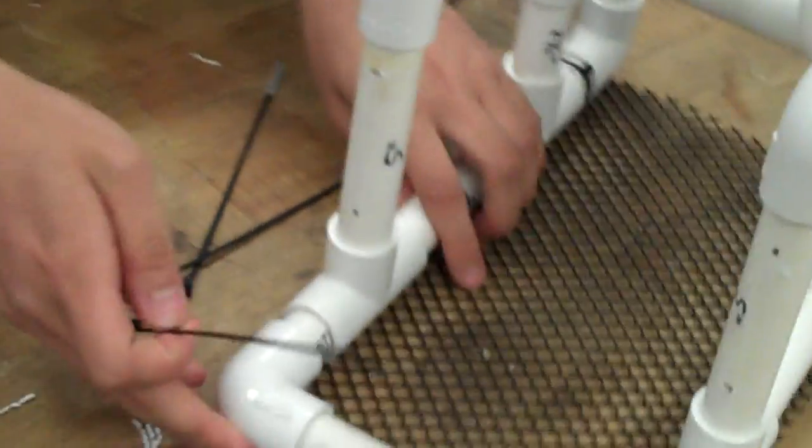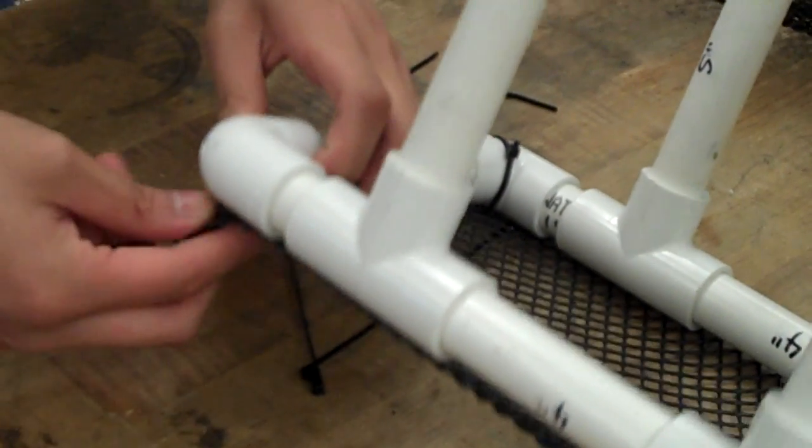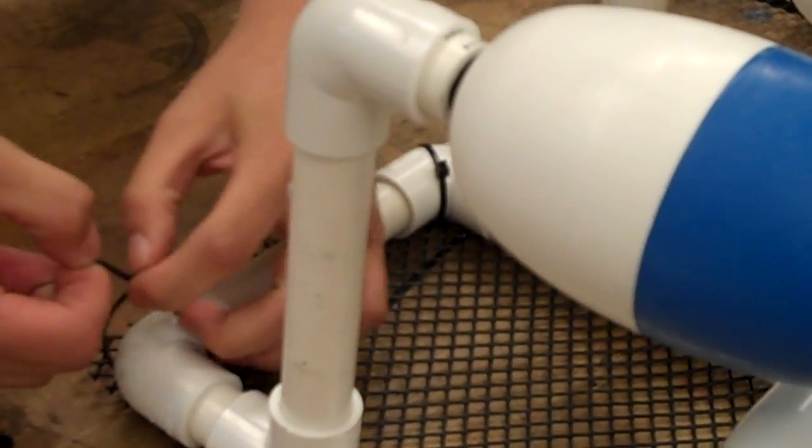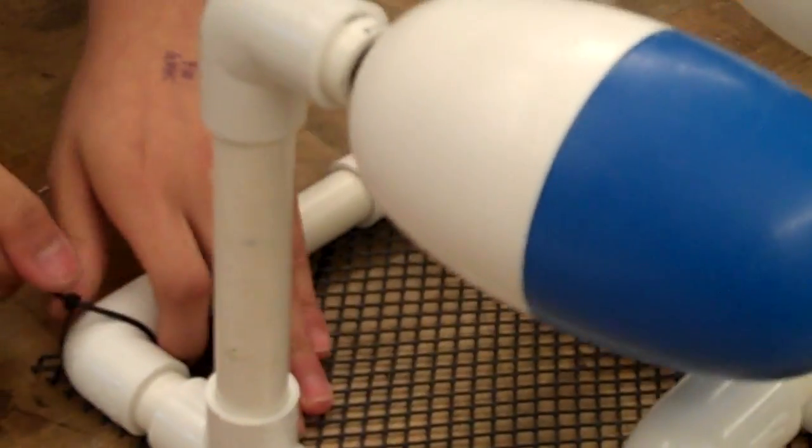And now repeat for each of the other ties. The placement of the twist ties is up to you, but you should try to use four to six twist ties to secure it in place.